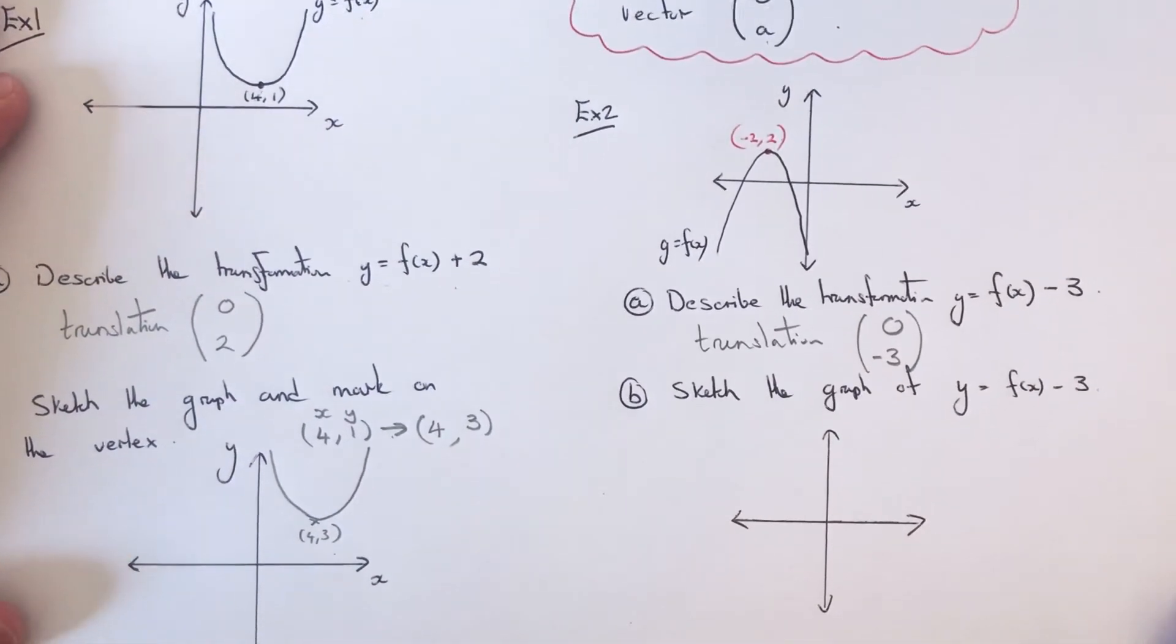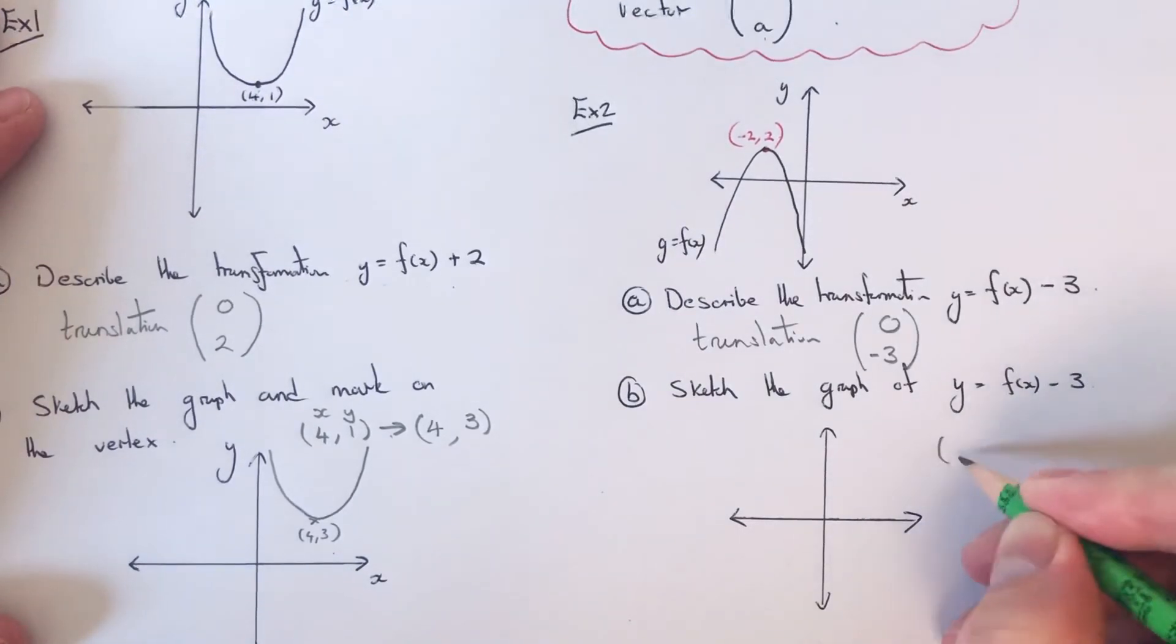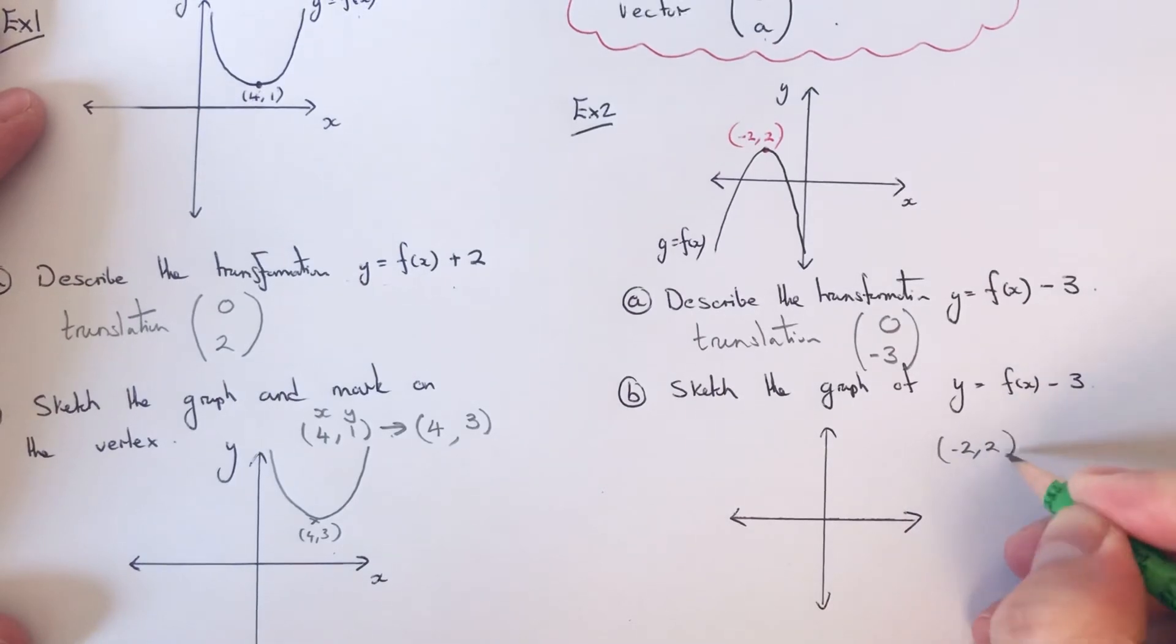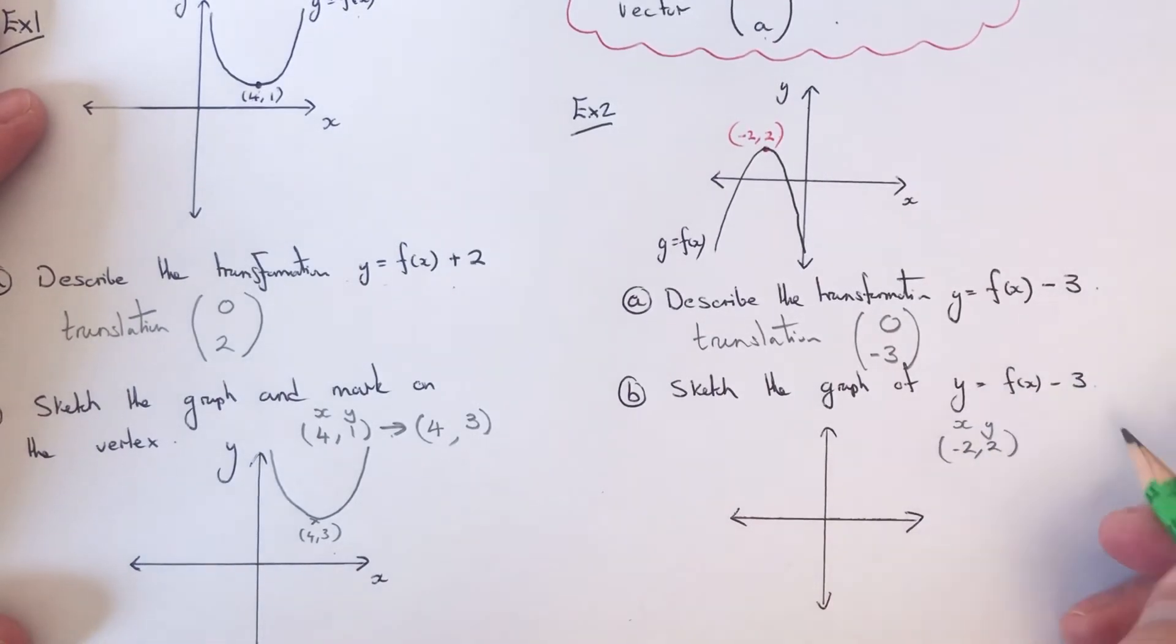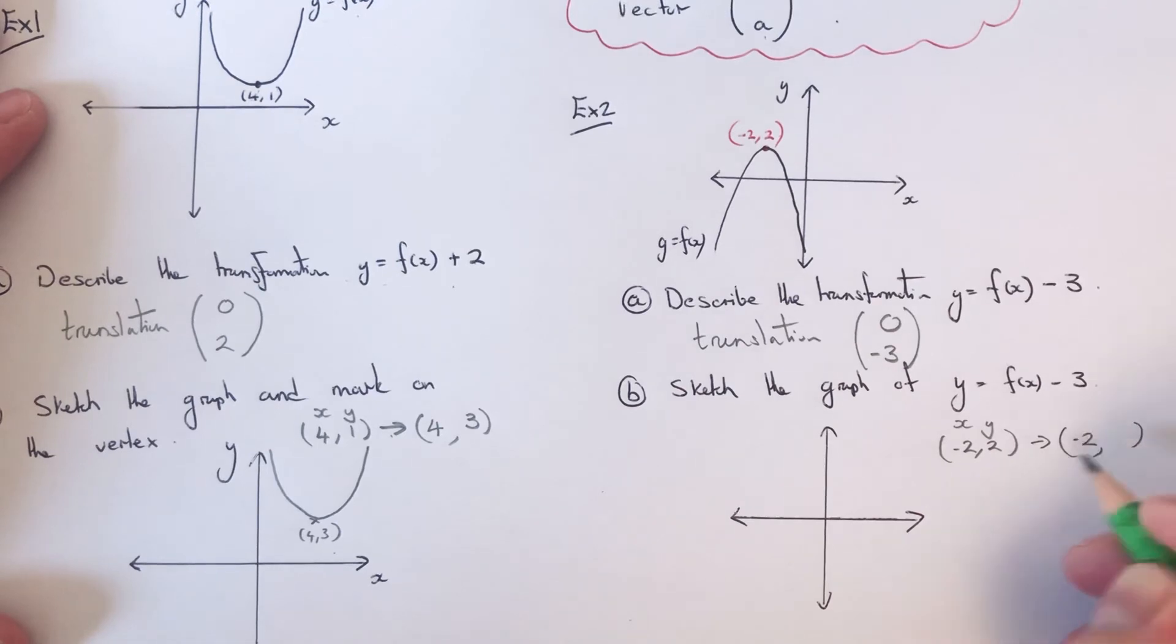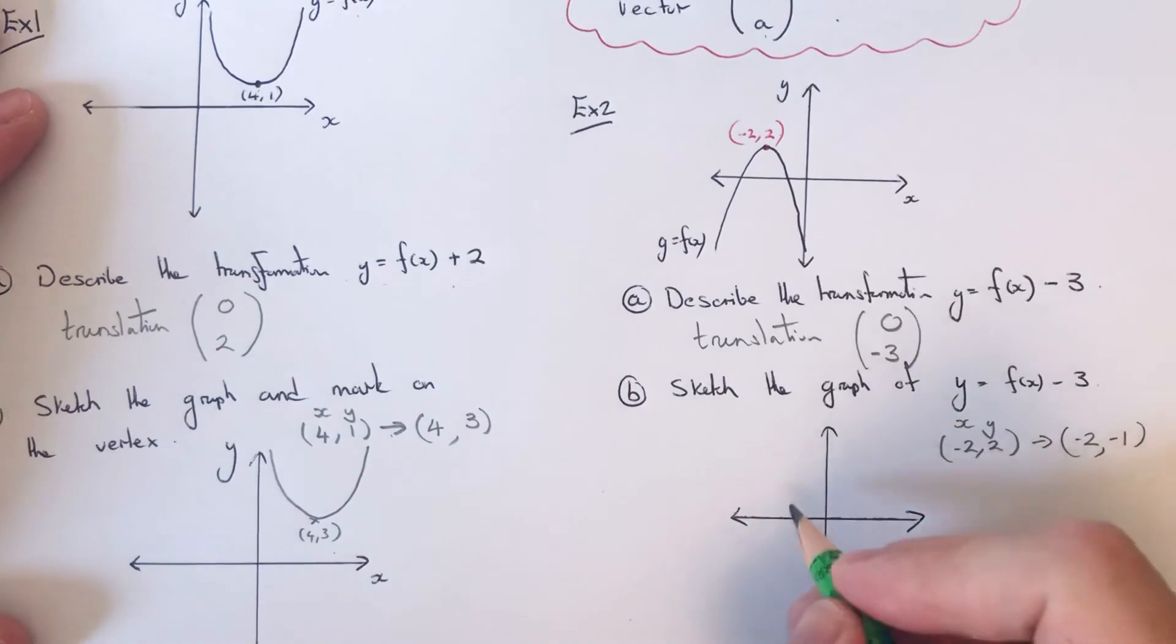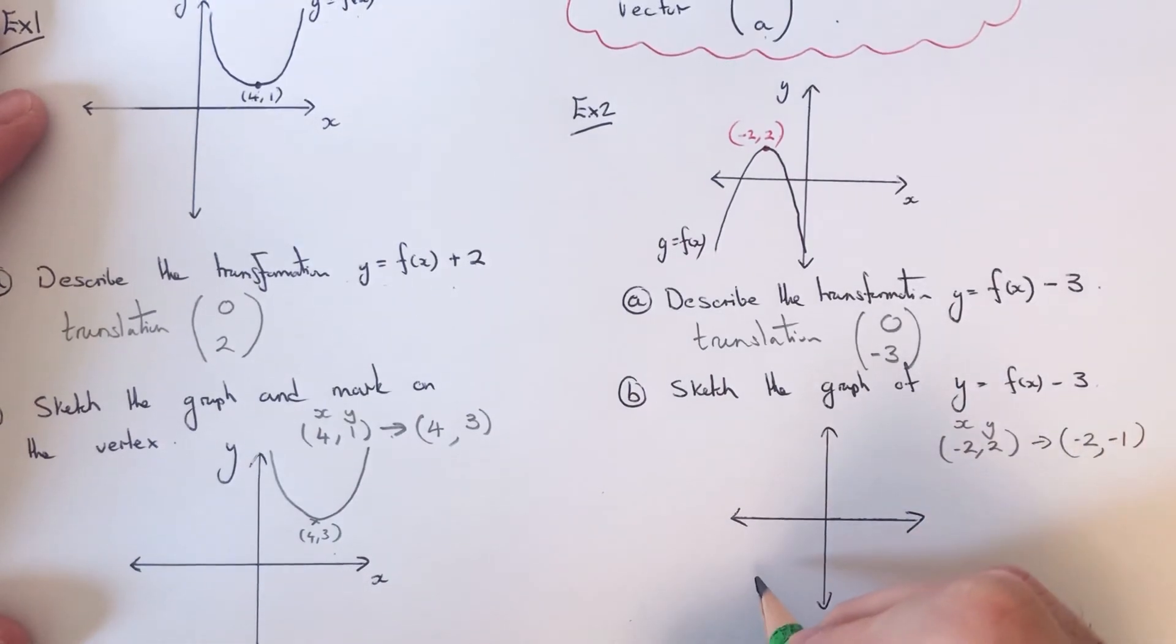So let's sketch the graph of y equals f of x minus 3. Our vertex was at the point minus 2, 2. So we just need to take 3 off the y coordinate. The x coordinate is unchanged. So if we take 3 off the 2, that would be at minus 1. So instead of being at minus 2, 2, it's at minus 2, minus 1.